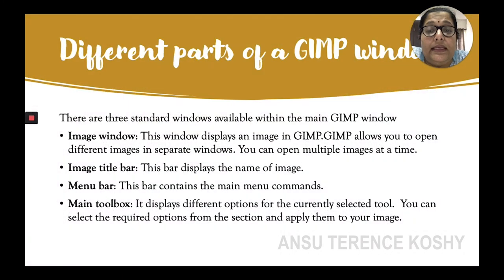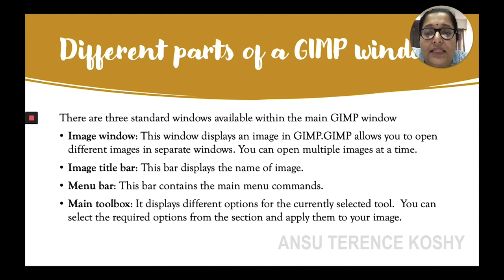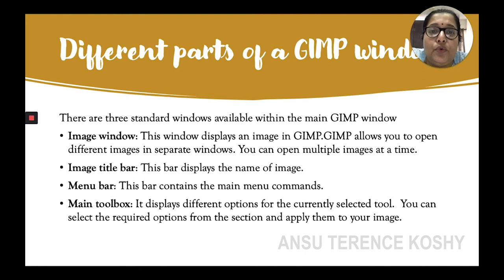There are three standard windows available within the main GIMP window: the toolbar window on the left, the middle area for screen editing, and the right side for the layers section. The Image Window displays an image in GIMP. GIMP allows you to open different images in separate windows — you can open multiple images at a time.